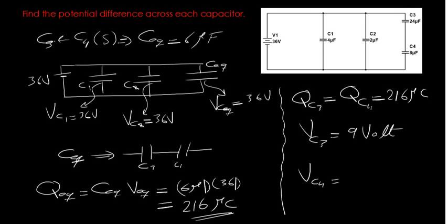Capacitor 4 will have the rest of the 36 volt but it's not going to hurt if we check that. So we're going to divide 216 micro column on the 18 micro and it is giving me 27 volt. If you add 9 plus 27 that will give you back the voltage across the equivalent of them which is the 36 volt.